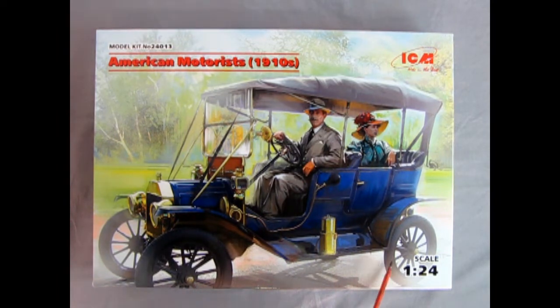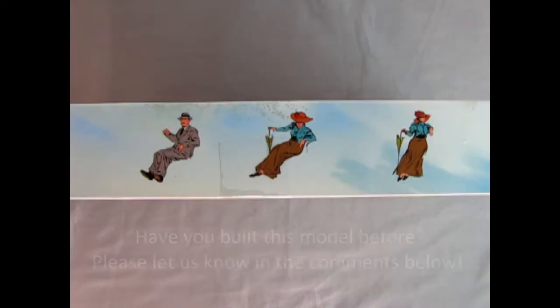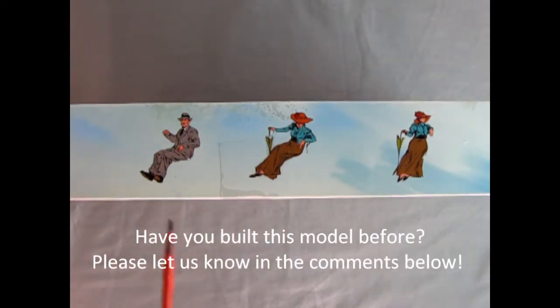I don't know. So here we have it in 1/25th scale by ICM which is out of the Ukraine and again really excellent models as we'll see. On this side of the box we can see Darling Papa and the young daughter here. You get a couple of poses so this helps you with your painting of the figures.